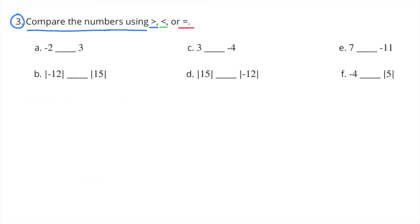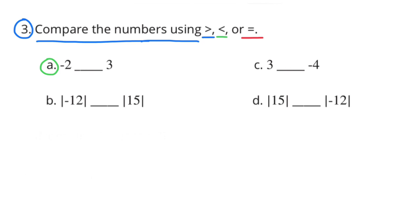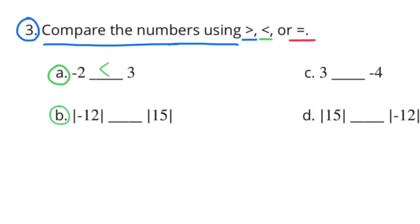Number 3: Compare the numbers using greater than, less than, or equal to. Part A: Negative 2 and 3. Negative 2 is less than 3. Part B: The absolute value of negative 12 and the absolute value of 15. The absolute value of negative 12 is less than 15. That's just like 12 is less than 15.